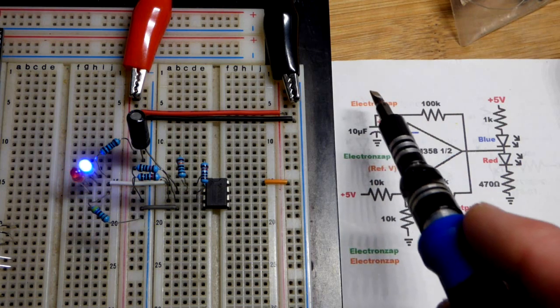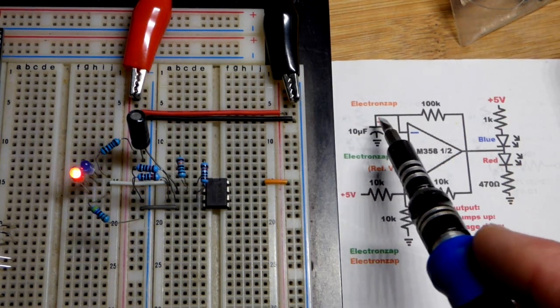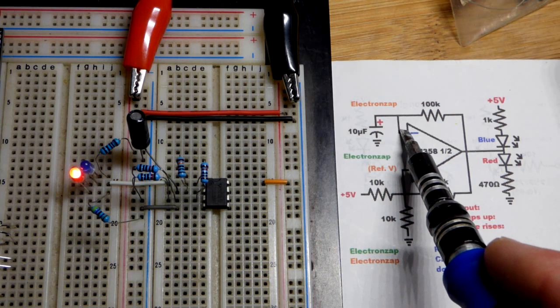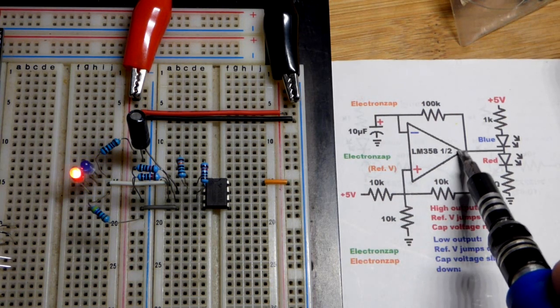It also charges the capacitor through the timing resistor and capacitor. Once the capacitor gets to a higher voltage than we got here because it is charging, then the output goes low.